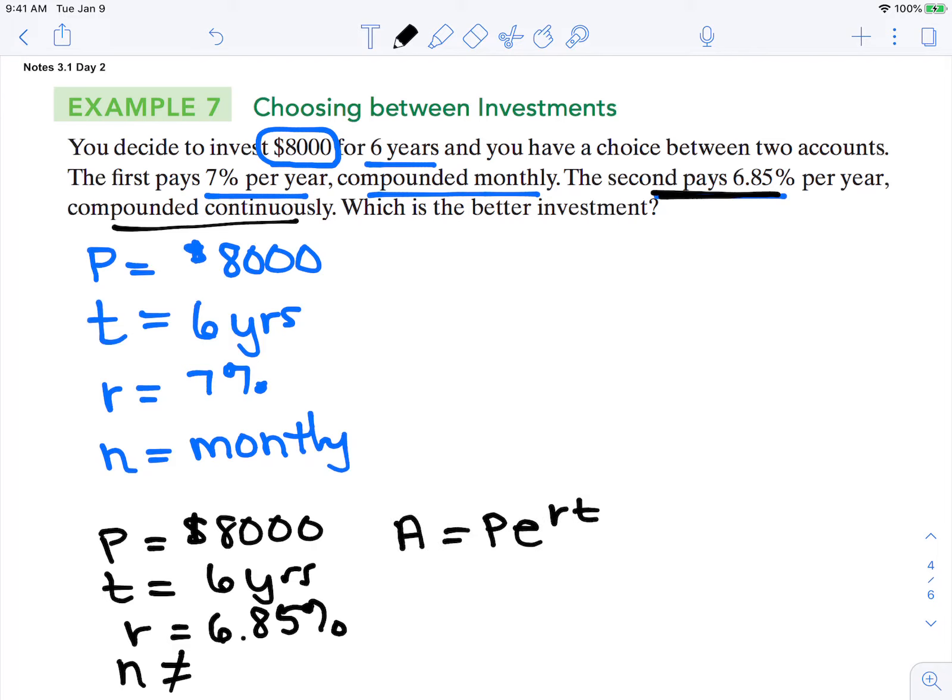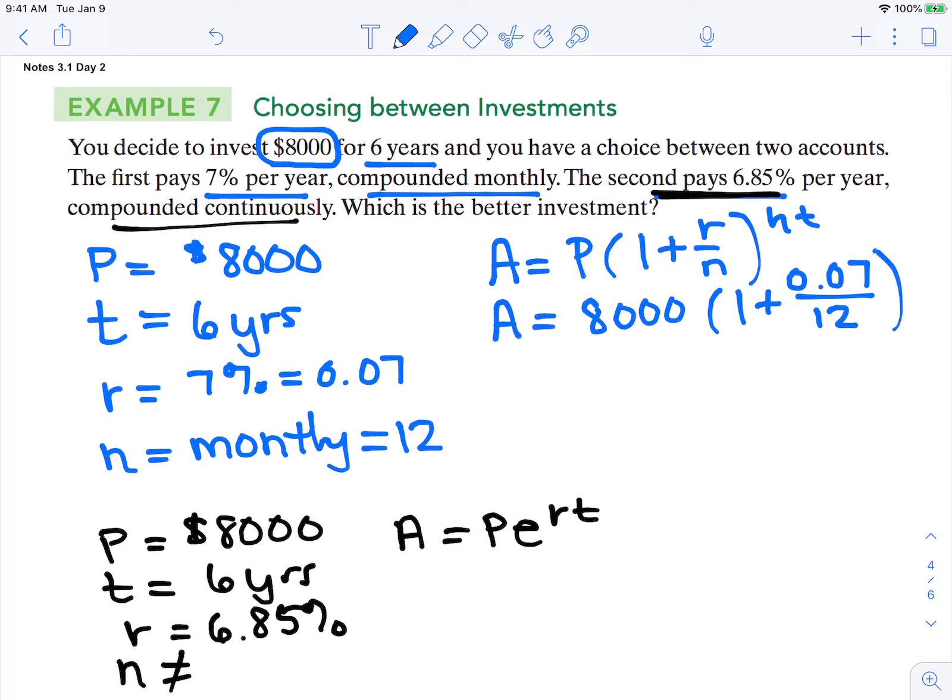The top one is compounded N times per year, so here's our formula. Let's substitute everything in. A is our end amount. $8,000 is our principal. One plus we need to change this interest rate to a decimal, so we move it two places to the left. So that interest rate will be 0.07. Compounded monthly means 12 times a year, divided by 12 to the power of 6 years.